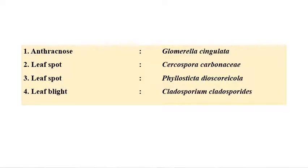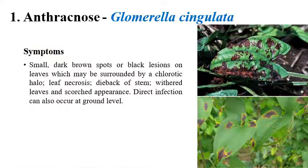These are the important diseases in mung bean: anthracnose, caused by Glomerula singulata; two types of leaf spots — one caused by Cercospora carbonaceae and the second by Phyllostrictor dyscoricola; and leaf blight, caused by Cladosporium cladosporioides. Now we'll see each one in detail.